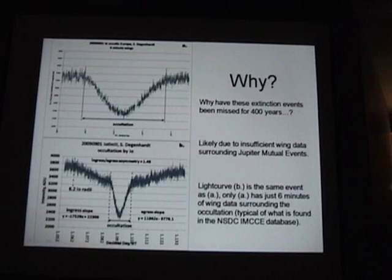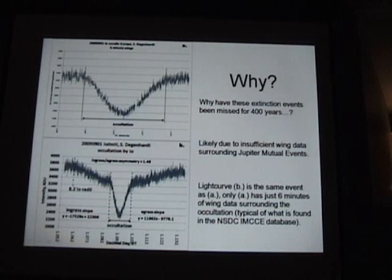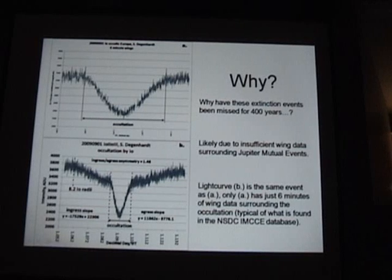Why has this been missed? My theory is we just haven't been looking out far enough. The top light curve represents what you'll find in a typical database — six minutes of wing data, maybe ten minutes at most — and you can't tell anything odd is happening. But look at the same data with an hour of wing data on each side: there's the extinction event. The intensity actually flattens in the six-minute wing data because this was a total occultation of Europa, and the densest part of Io's atmosphere closer in is more consistent, creating a flat extinction area.